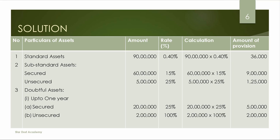Now, if you want to apply the percentage, you can apply it to each asset directly, or you can follow a format. The format includes: asset type, amount, and percentage. For Standard Assets, the amount is 90 lakhs and the percentage is 0.4%.